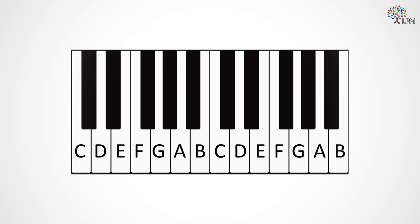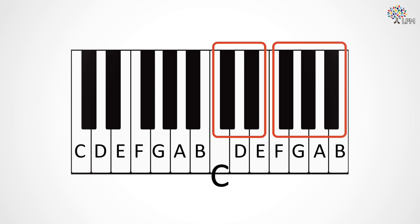For a quick visual cue to find your way around the keyboard, look for the groups of two and groups of three black keys. The white key to the left of the two black note groups is always C, and the key to the left of the three black note groups is F.